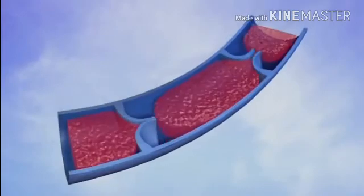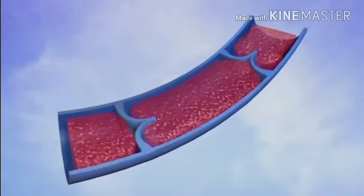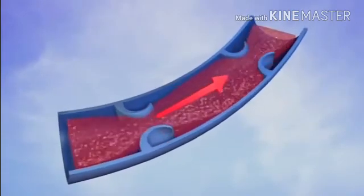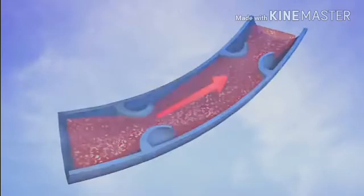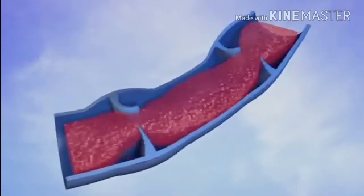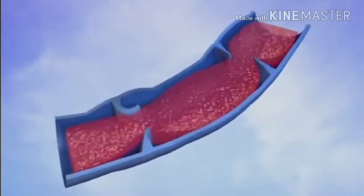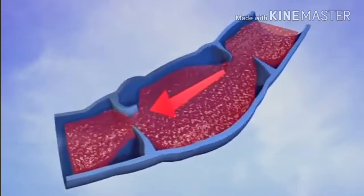In healthy veins, one-way valves prevent blood from pooling and flowing backwards. In diseased veins, however, the valves do not close properly and allow blood to pool in the extremity.